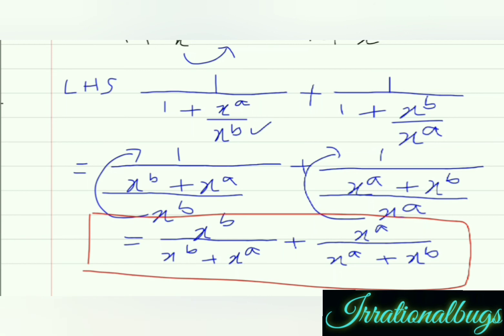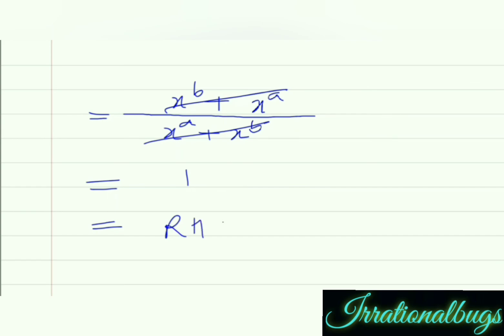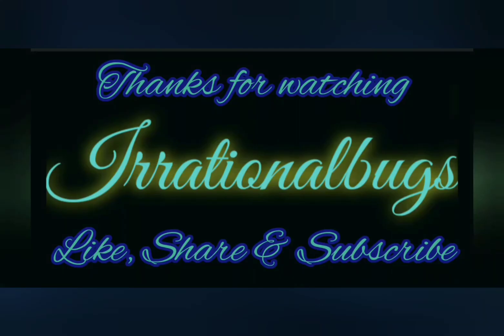So, x raised to the power b upon (x raised to the power b plus x raised to the power a), plus x raised to the power a upon (x raised to the power a plus x raised to the power b). Solve करते हैं further — denominator common हैं अब दोनों का, so numerator add हो जाएंगे. Numerator में लिखेंगे x raised to the power b plus x raised to the power a. Numerator and denominator both same आए हैं so cancel हो जाएंगे — which is equals to 1 = RHS. Thank you.